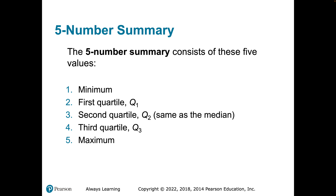Once we understand quartiles, we can create what's called a five-number summary. A five-number summary consists of the minimum value, the maximum value, and the first, second, and third quartile. Q2, the second quartile, is the same as the median. This is just going to be one of those things you have to write in your notes — these are numerical summaries we create to better describe quantitative data.